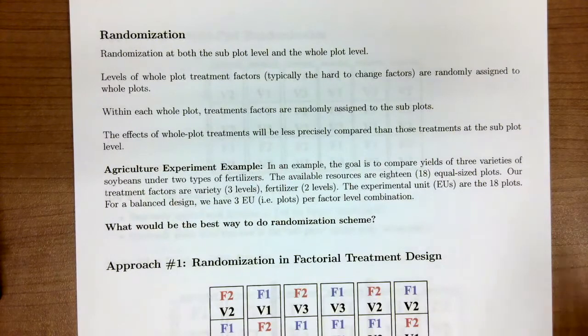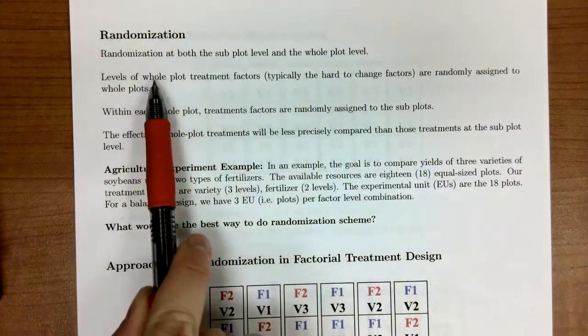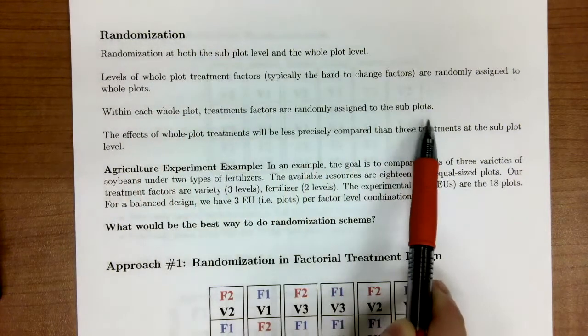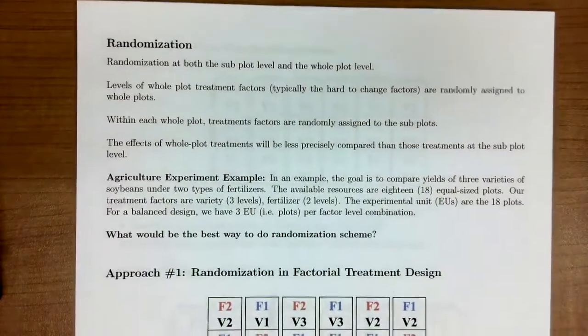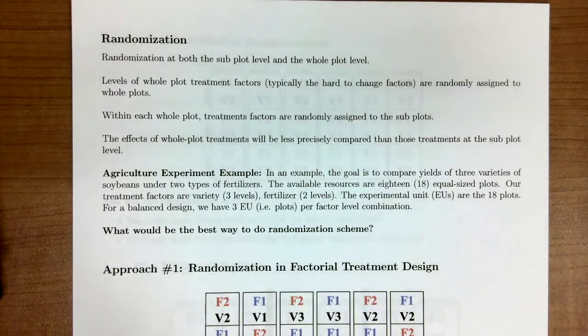In a subplot design, we are inducing a restricted randomization scheme. What I mean is we're restricting our randomization because we first randomize our whole plot, and then we randomize our subplots. An unrestricted randomization would look like a CRD with a factorial design. When we have this restricted randomization, it's going to cause the effect of the whole plot treatments to be less precise compared to those treatments in the subplot level. So we are losing a little bit of accuracy, but being practical, it's needed.